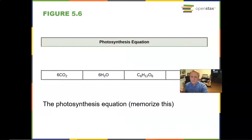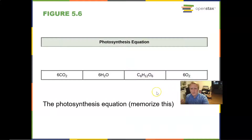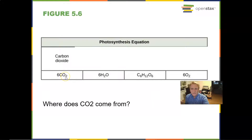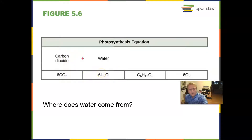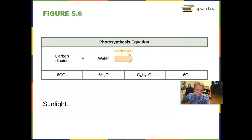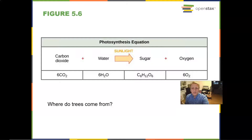Let's talk about the photosynthesis equation. So 6 CO2 — that's carbon dioxide — come into the plant. Where did those carbon dioxide come from? They came from air; the plant absorbed that carbon dioxide, and we're going to talk about how it did that later. Water is also involved, absorbed through the roots of the plant. You throw in some sunlight energy into this equation, and it makes sugar, and it makes oxygen.